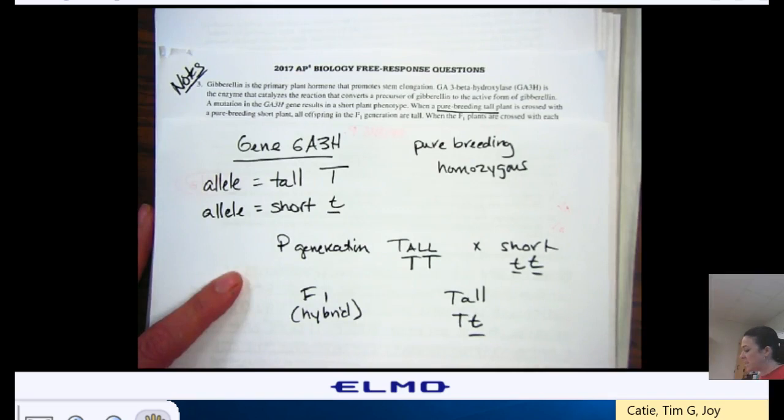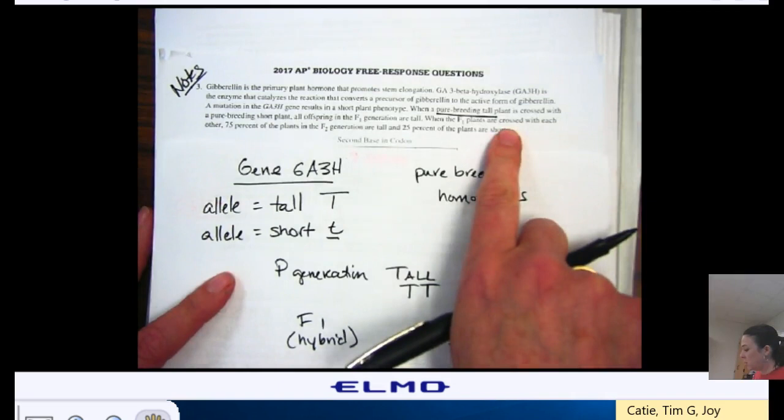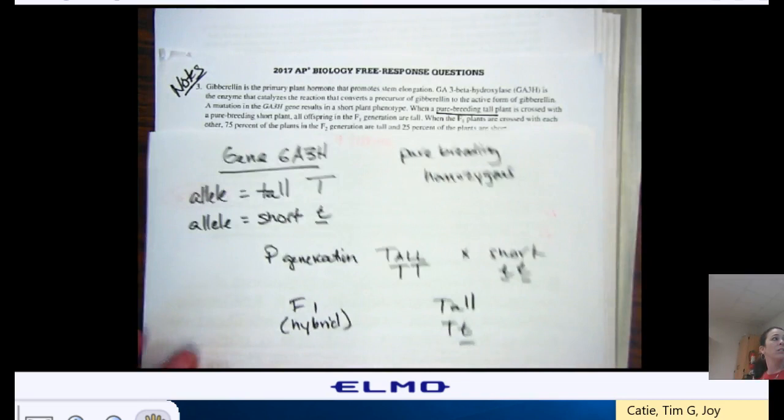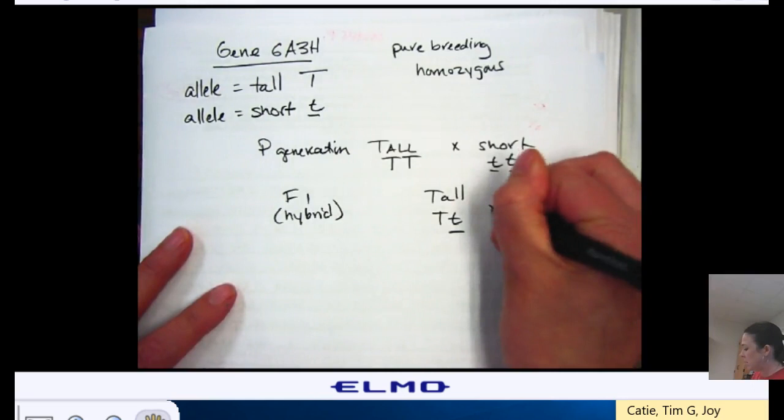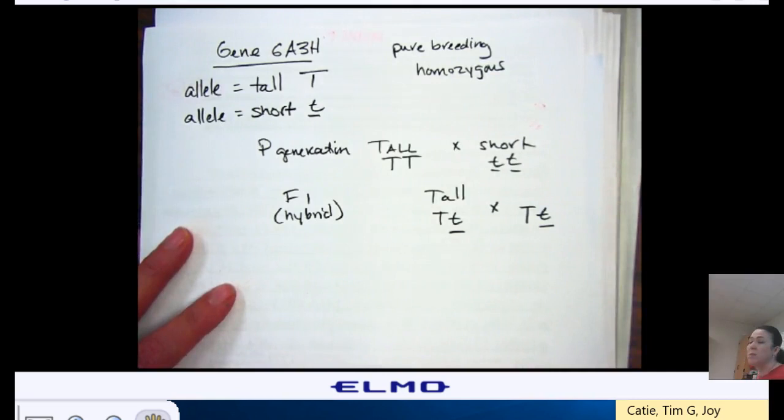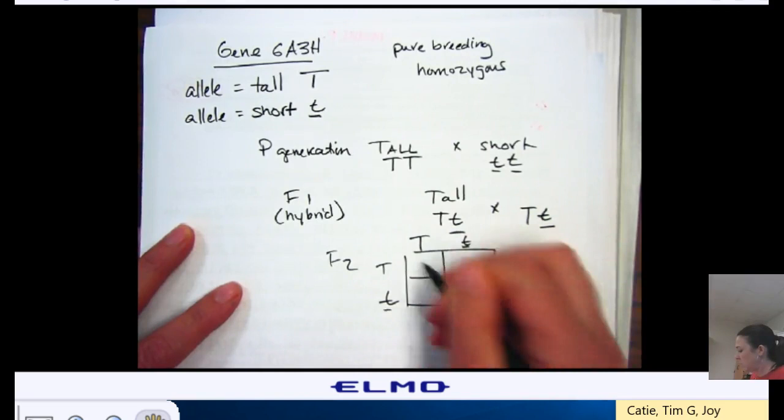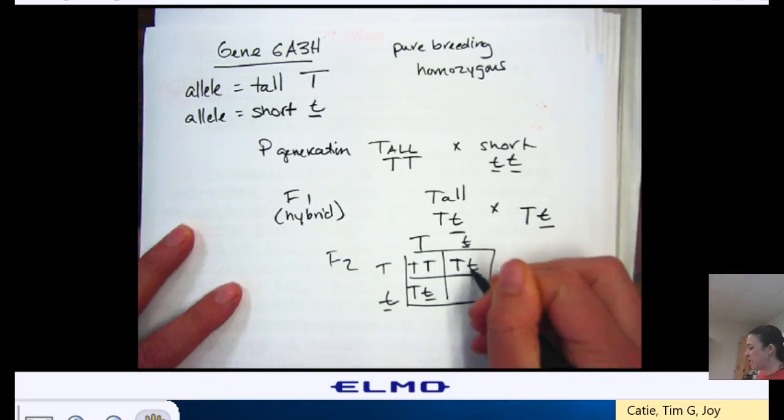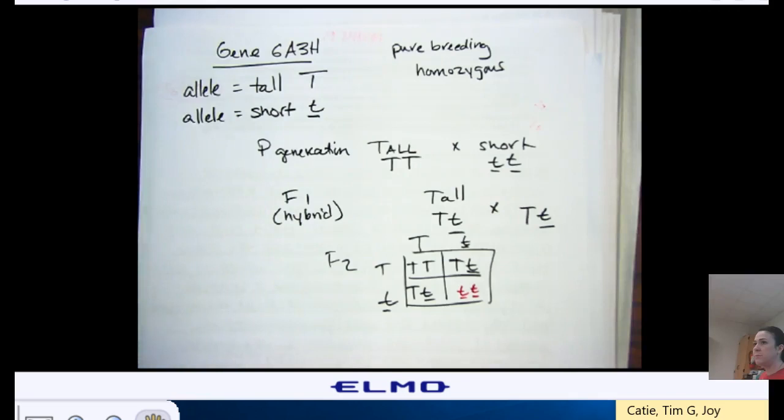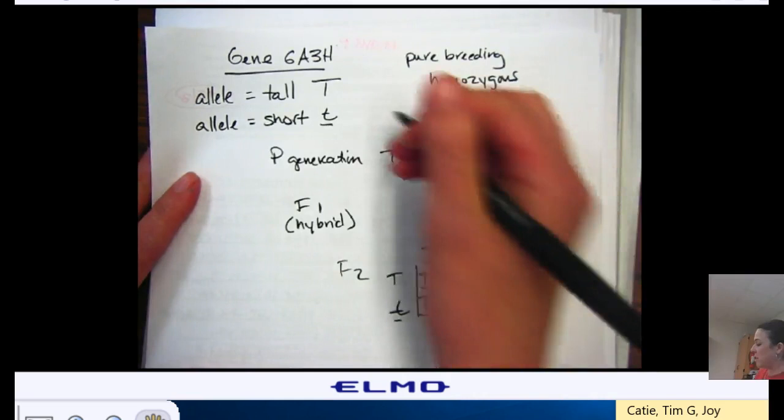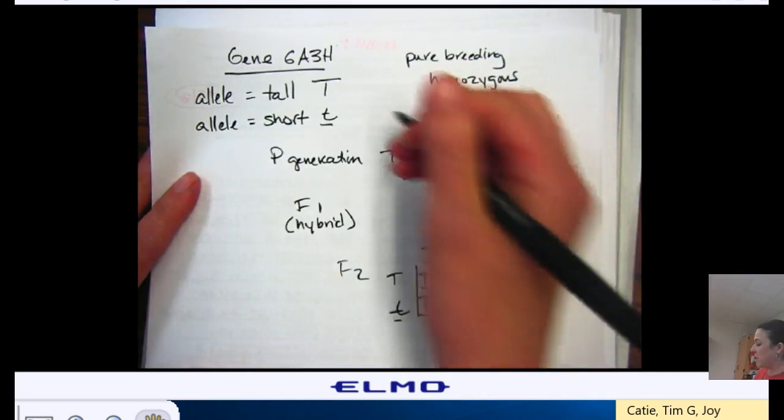The next thing it says is when I cross two F1s with each other, I get 75% of the plants in the F2 generation that are tall, and 25% that are short. So, an F2 generation comes when I cross two F1s. So, I cross another F1, and my F2 will give me 75% that are tall, and then here's my 25% that are short. So, I know that this is showing my inheritance pattern shows complete dominance.